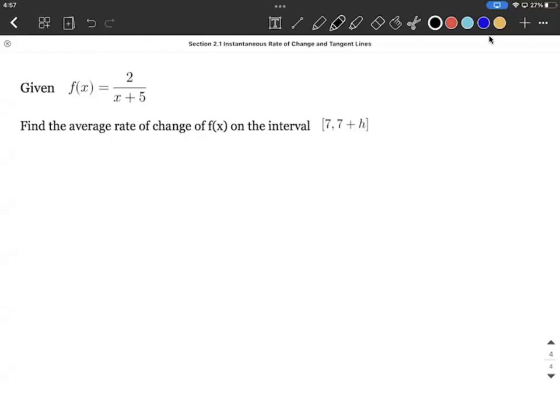Okay, we're given a rational function, f of x is 2 over x plus 5. Our goal here is to find the average rate of change over this given interval. Now, one mistake sometimes we make is this is an interval where these are both x values. From an x value of 7 to an x value of 7 plus h, which looks a little bit strange at first.